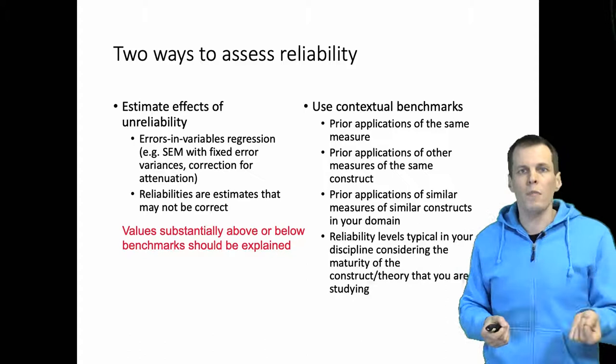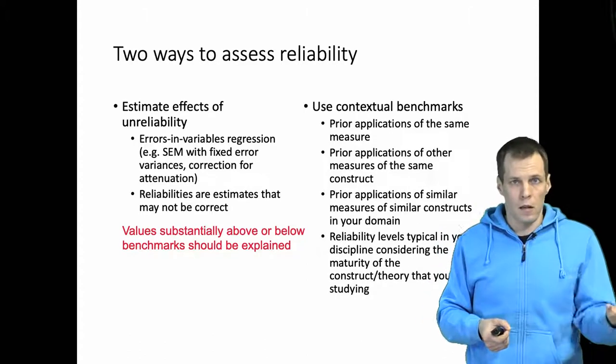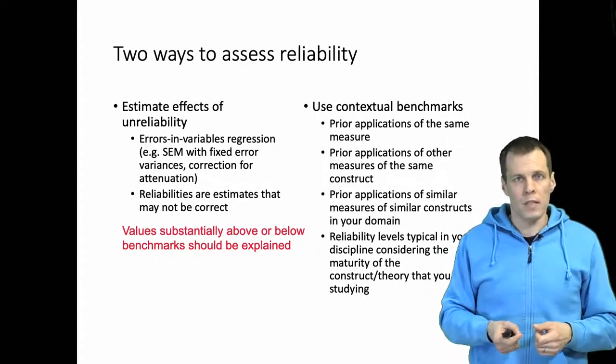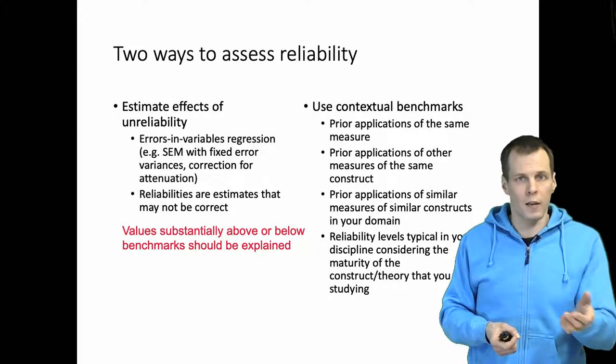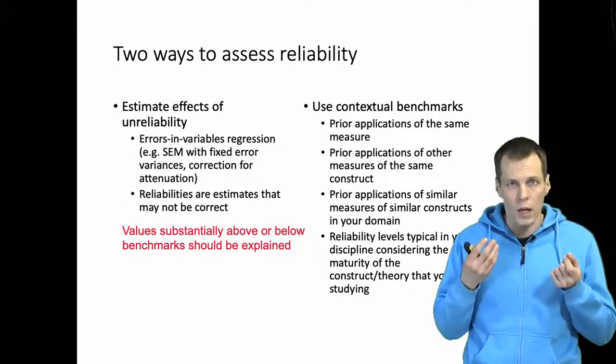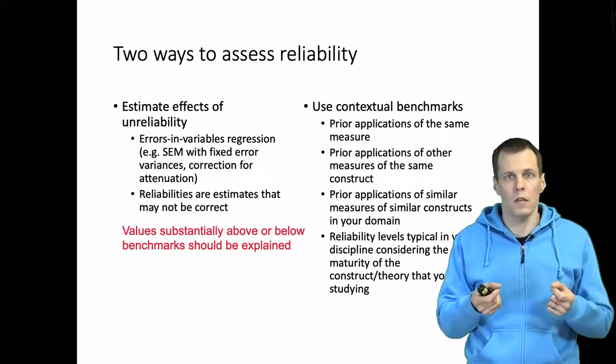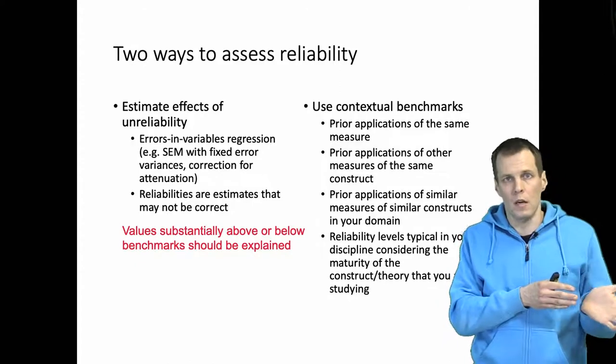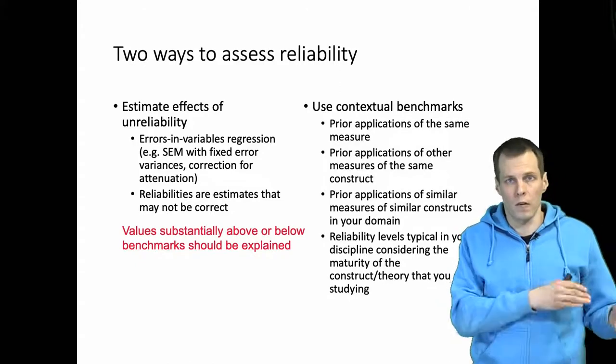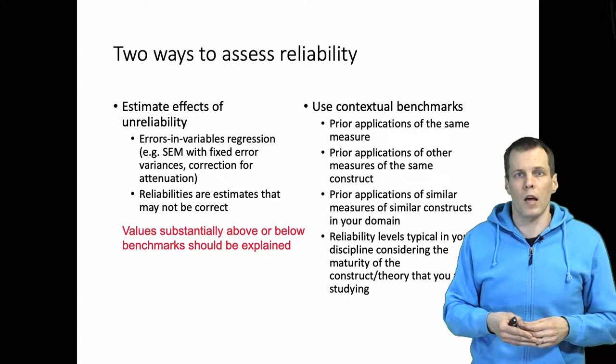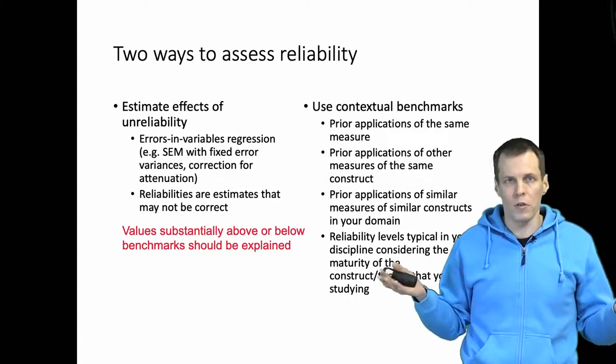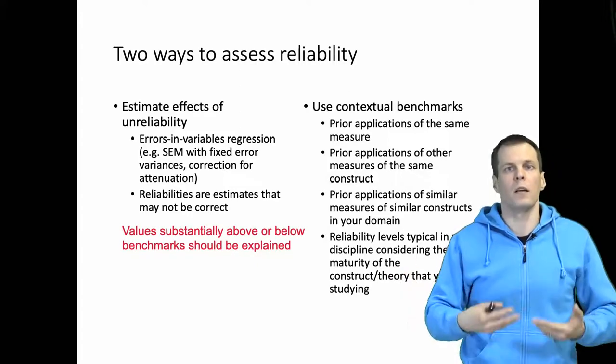So if reliability is typically assessed and it's, let's say, 0.75, and then you get a 0.95 reliability, then you need to explain why there is a difference. You also need to obviously explain differences in the other direction. So if others have reliability of 0.85 and you get 0.65, then you need to explain what is the reason.